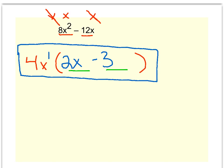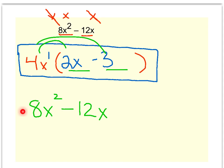Let's check the work using the distributive property. Four x times two x is eight x squared. Four x times negative three is minus twelve x. Since this matches where we started, we know we factored it right. It's a circular process: you start with the problem, factor or divide everything out, then put it back together by multiplication — a way to check if you've done it right.